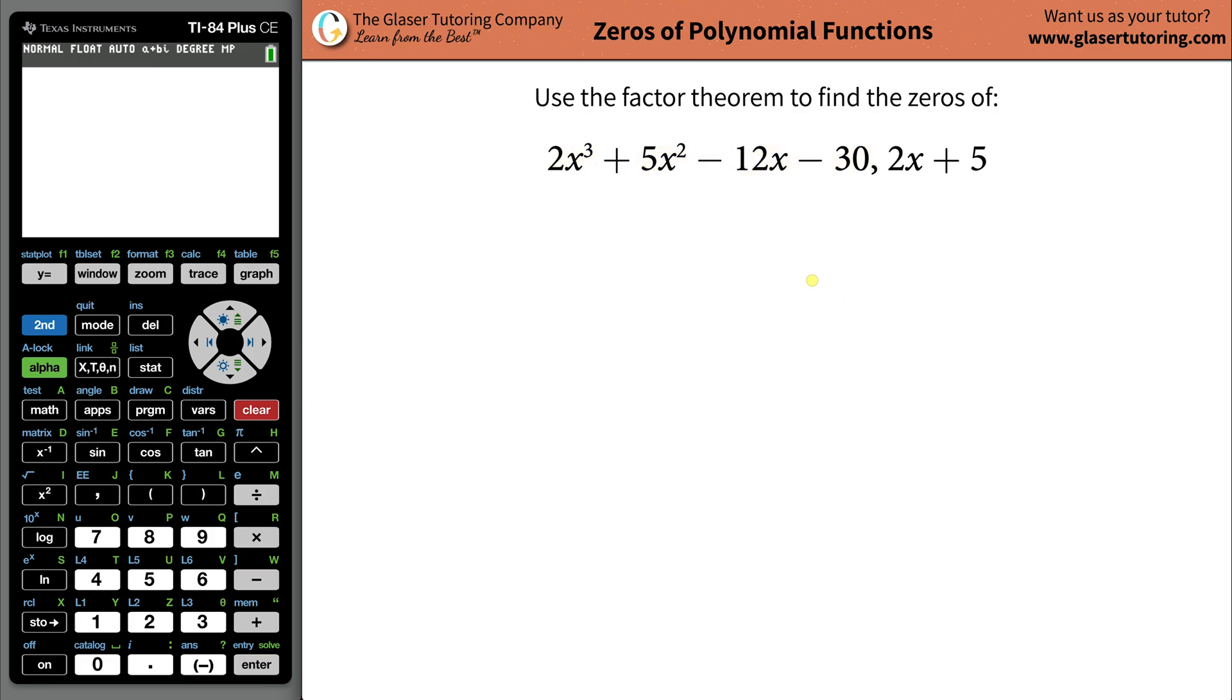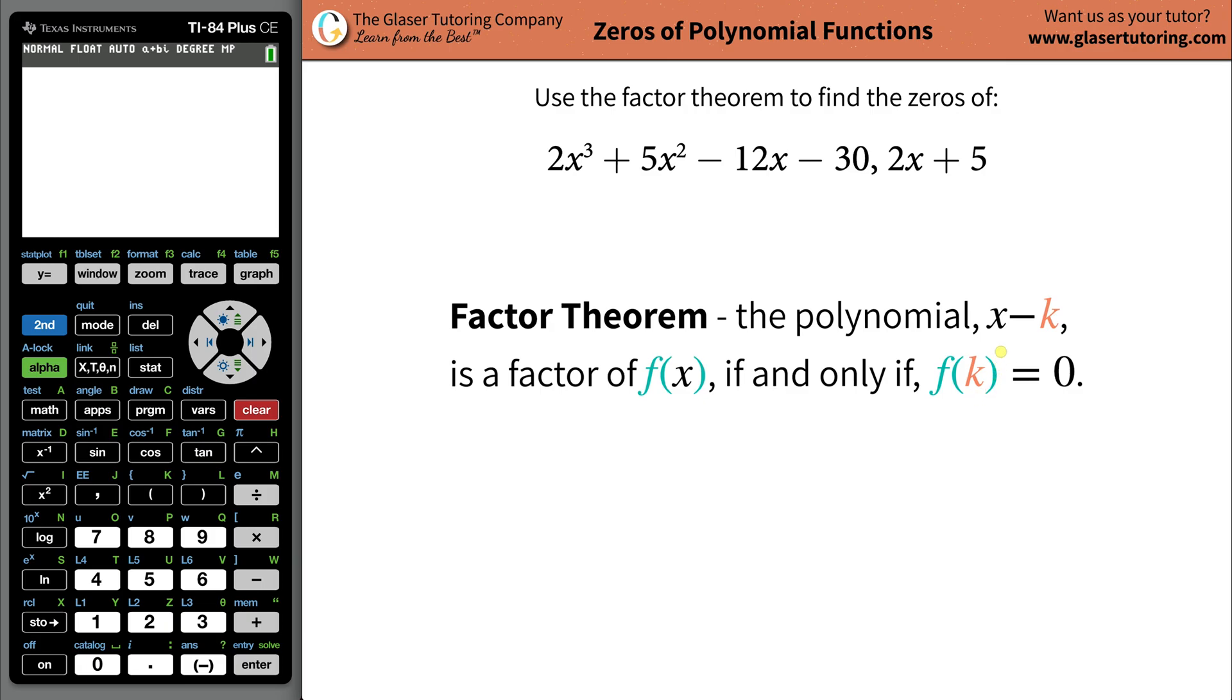In order to do this, we have to know what the factor theorem says, so let's take a look. So it basically says that the polynomial, x minus k, which I kind of have in the following form roughly, is a factor of some function, f of x, which is represented as this in the problem, if and only if f of k, or when the function is evaluated at the value of k, is equal to zero.